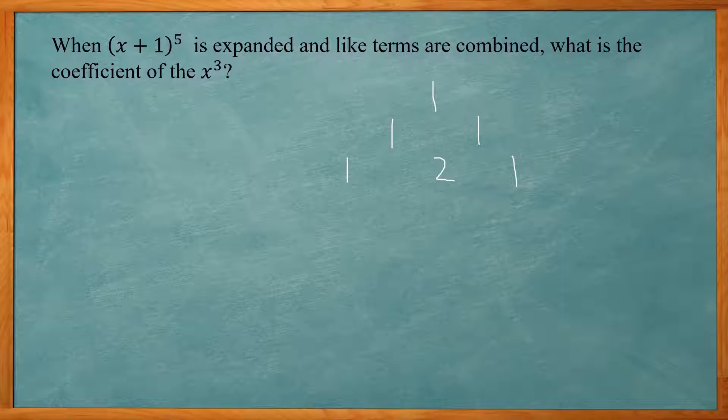Alright, so again we go to the next level. It will be a 1 here. Then we get 1 and 2, we add those together to get 3. And 2 and 1 to get another 3. And then the 1 at the end.